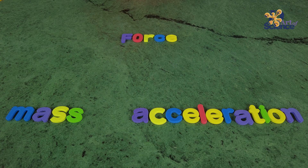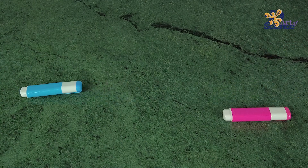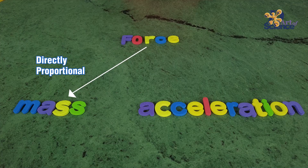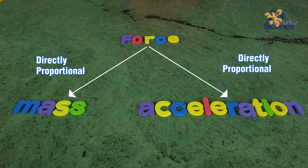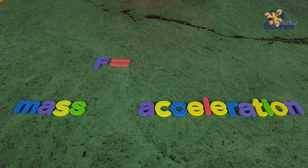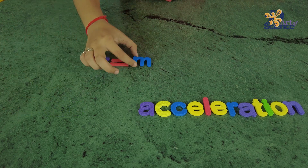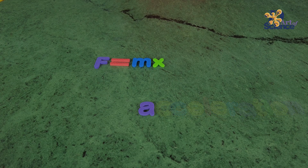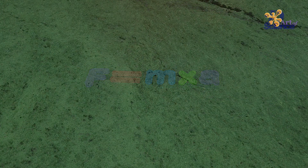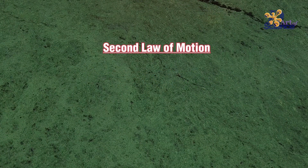Now that we know what acceleration is, we can say that if we apply more force the acceleration of an object increases, because as we saw earlier the blue marker traveled at a higher speed when more force was applied. Therefore force is also directly proportional to the acceleration of an object. Combining the two, we get force equals mass times acceleration. Greater the mass, greater is the force required, and if the force increases, the acceleration also increases.